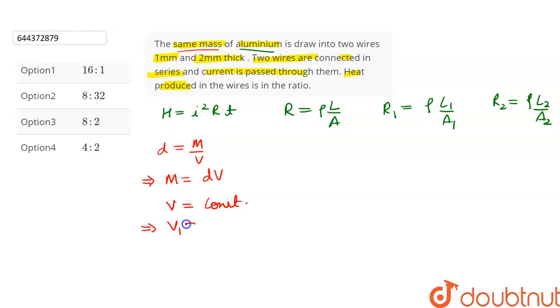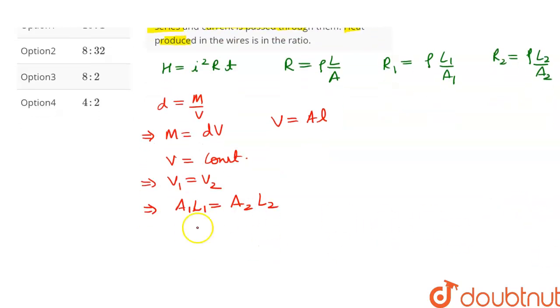So we can write V₁ = V₂ and we know that volume = area × length. So this can be written as A₁L₁ = A₂L₂. So from here we get L₁/L₂ = A₂/A₁.